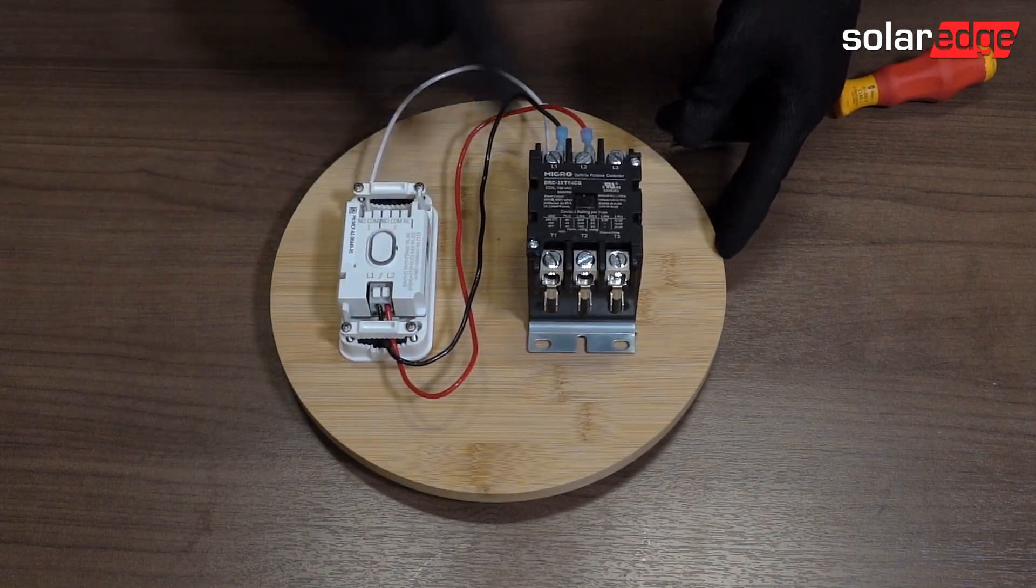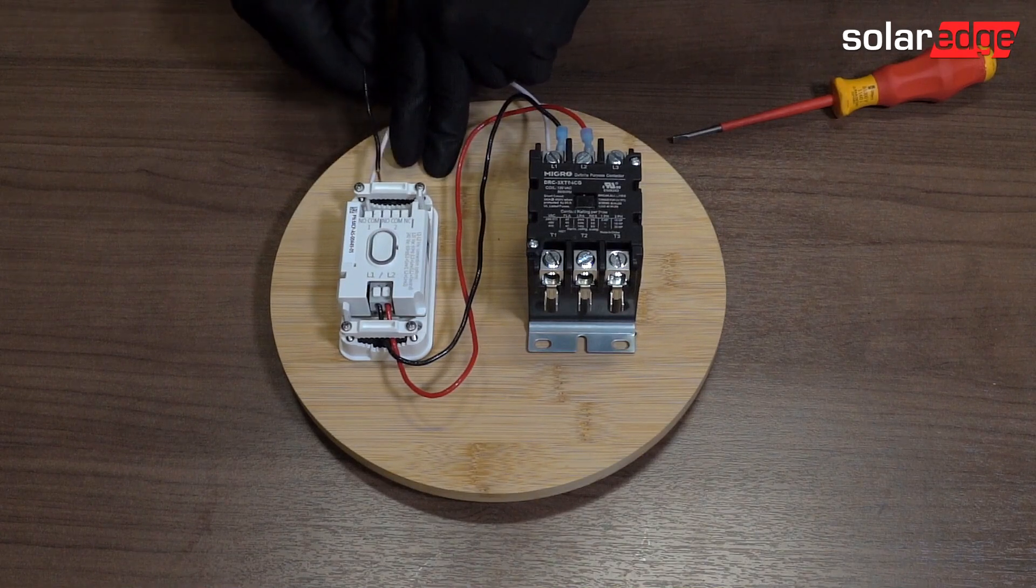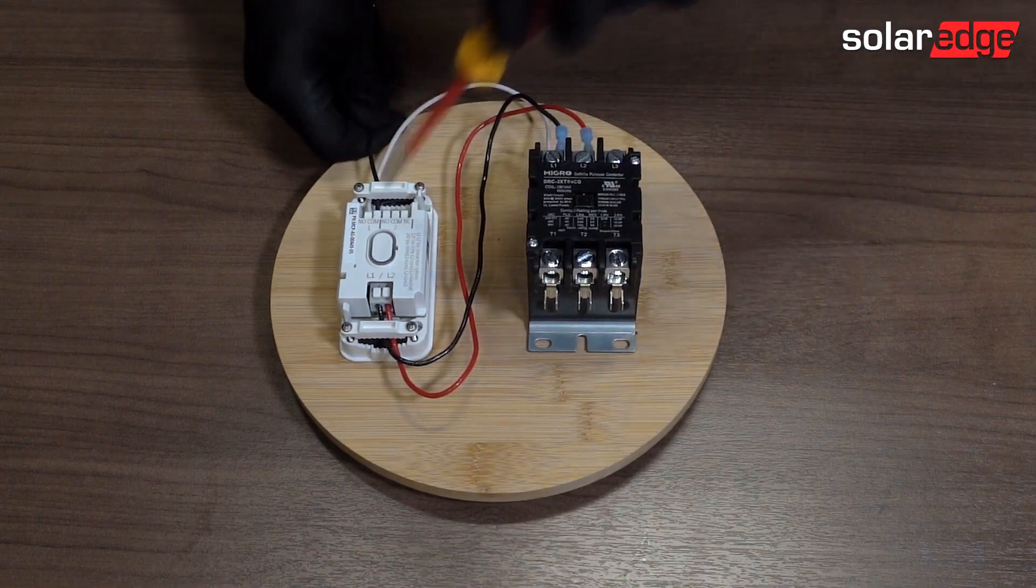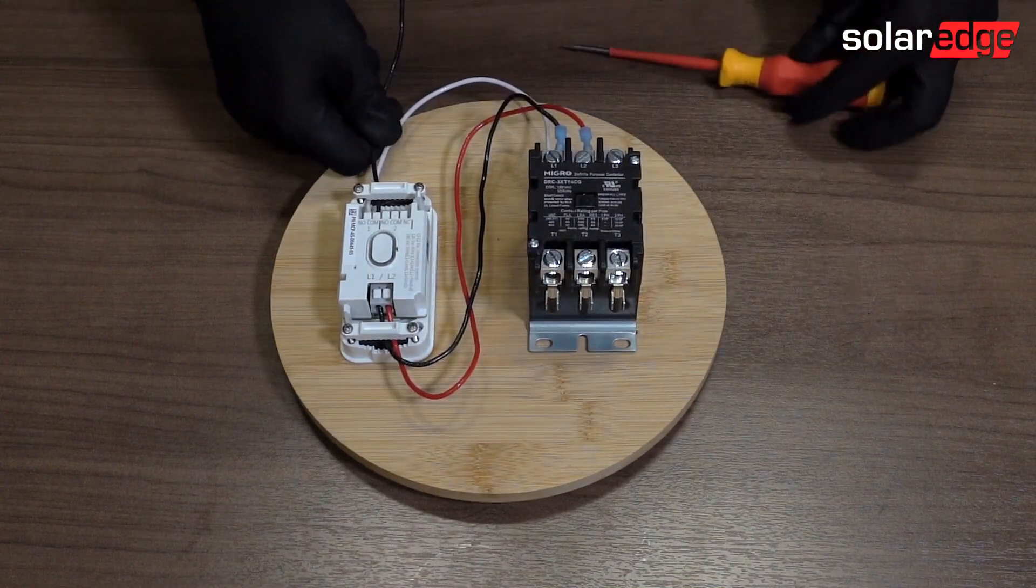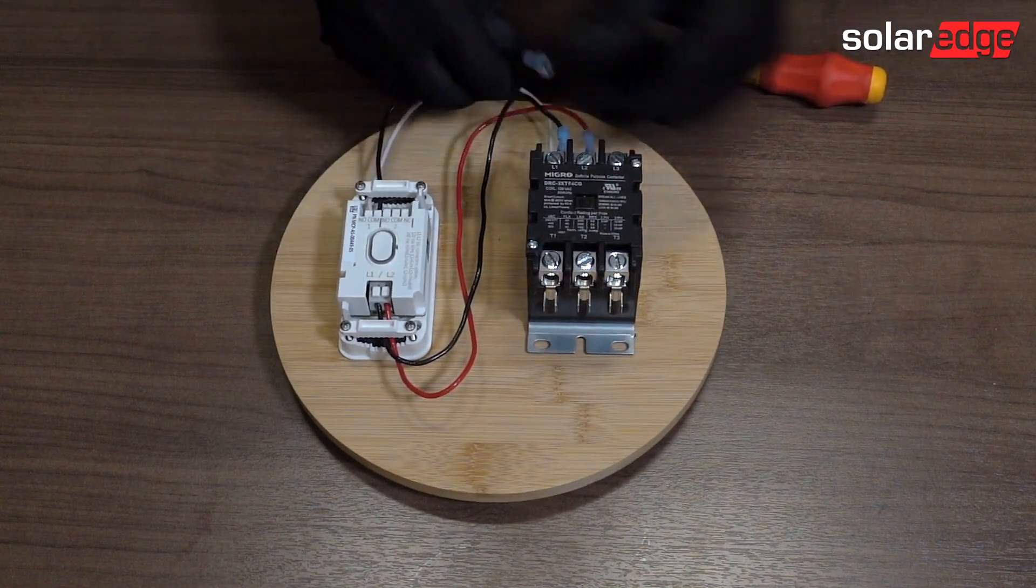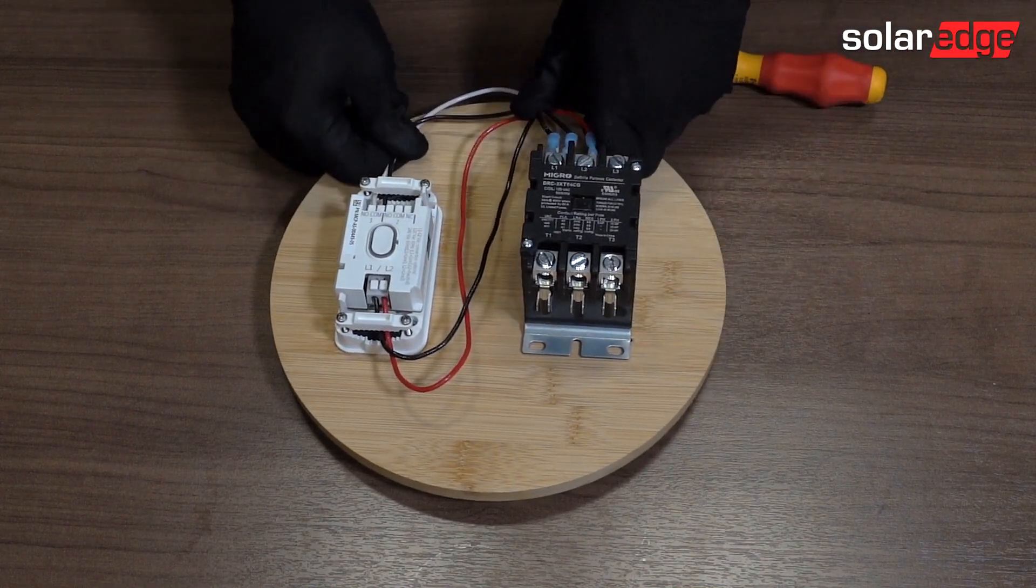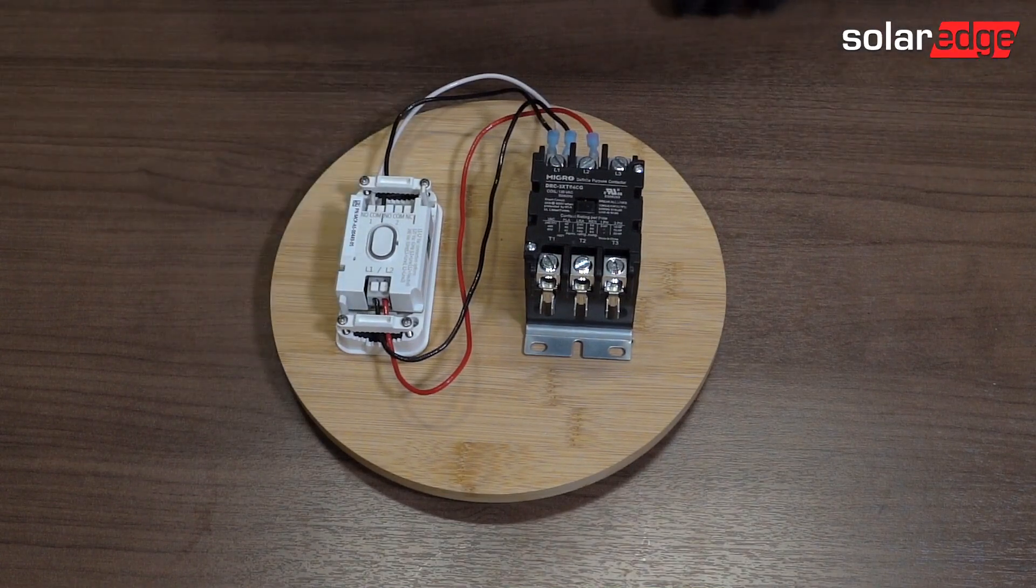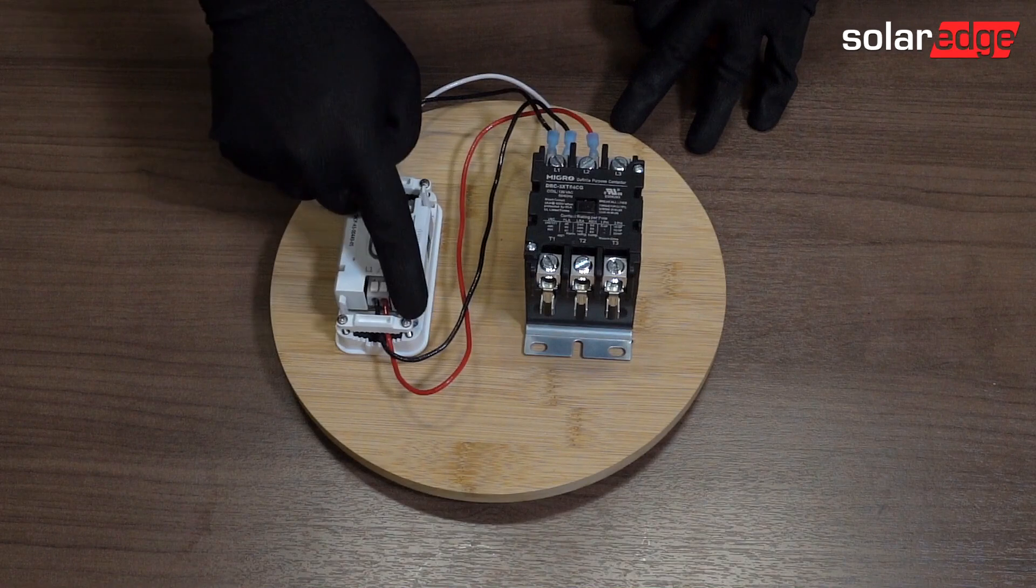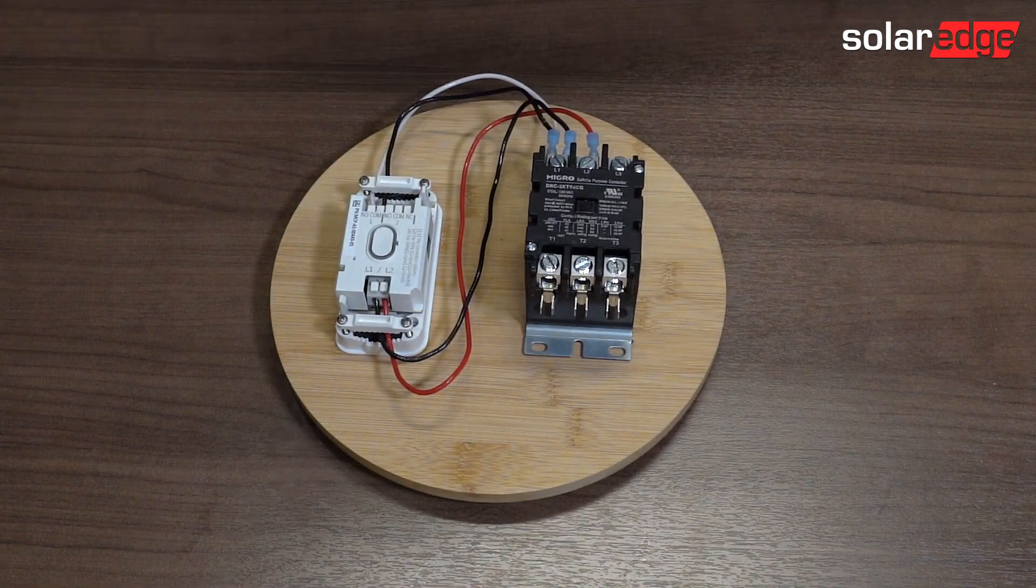And then we're going to go common to line one. Common to line one. Great. When all your wiring's done with the load controller, you can use your Phillips blade screwdriver and close up these strain reliefs.